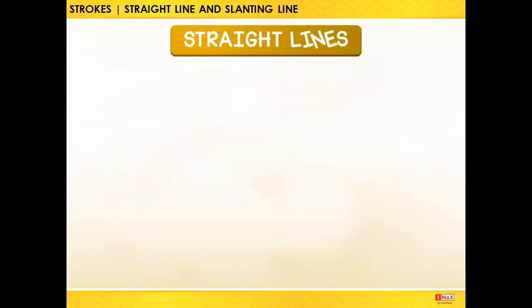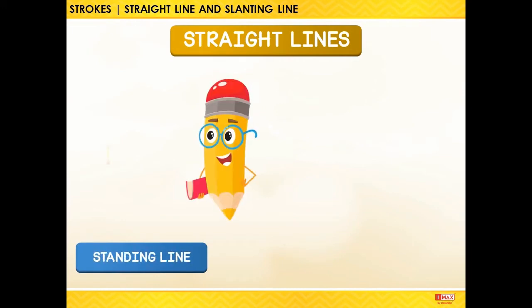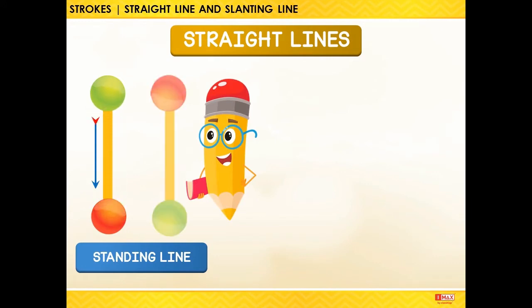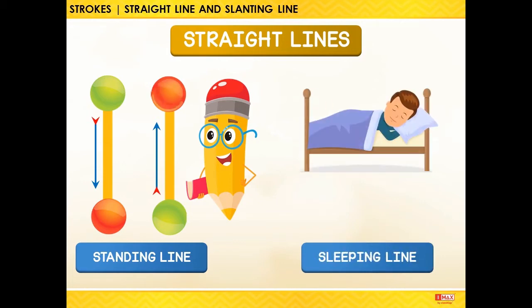Straight Lines. A straight line can be a standing line that we draw from top to bottom, or bottom to top. A straight line can also be a sleeping line that is drawn from left to right.